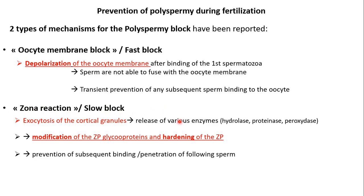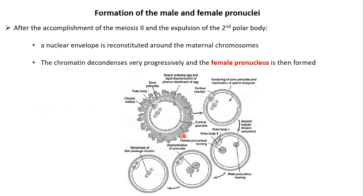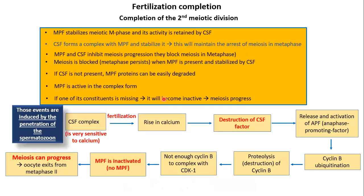We have cortical granules on the surface of the oocyte, located at the cortical region. After the fusion of the sperm cell with the oocyte, those cortical granules will fuse with the cytoplasmic membrane and will release their content into the outside, in the perivitelline space. Those cortical granules contain enzymes, and they will release their proteolytic enzymes into the perivitelline space.